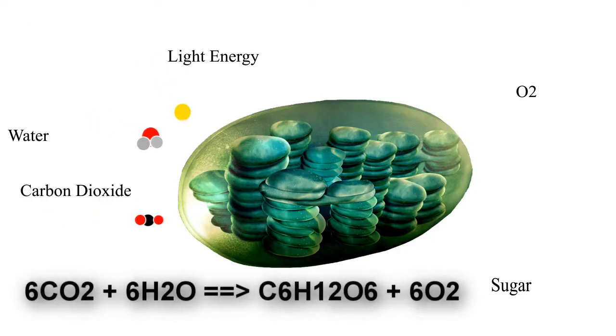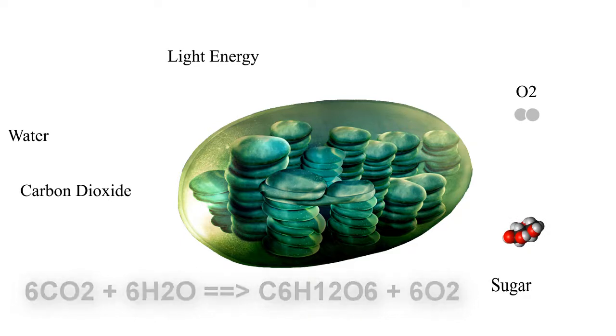Photosynthesis occurs in the chloroplast and happens in two parts. There are light-dependent reactions which occur in the thylakoid. Light and water are taken in, and ATP and NADPH are produced. Oxygen is also given off as waste. The NADPH and ATP are then used in the carbon fixation reactions to take carbon and produce glucose.